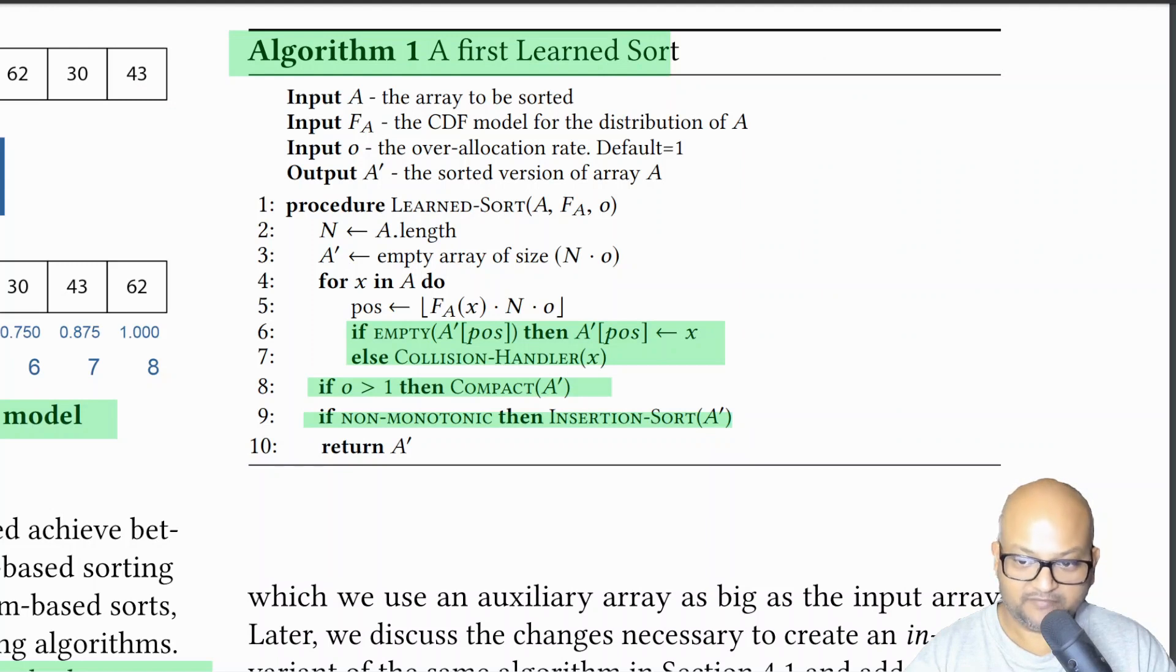Let's look at a simplistic version of how this would work. Imagine for the moment that we already have learned the CDF of the input data. Now obviously this CDF model is not going to be perfect, so it might not give us the exactly correct position of an element in the final sorted array. So what we do is that we allocate an output array which is slightly over-provisioned by this over-allocation rate o. So it's slightly larger than the input array, and then we look at each element and map it to its position as predicted by this CDF that we have learned. And if the position in the output array is empty, then we simply put it there, but if it is not, then we have a collision and we need to do something about it.